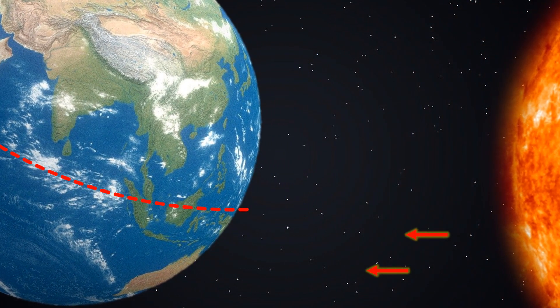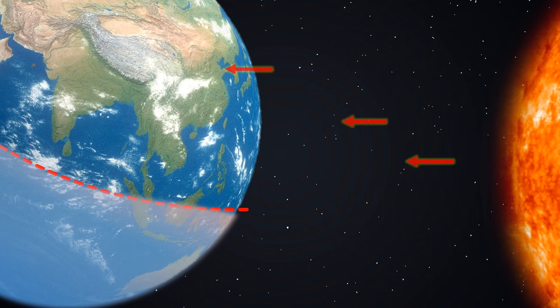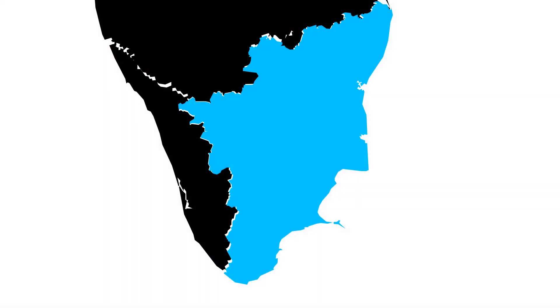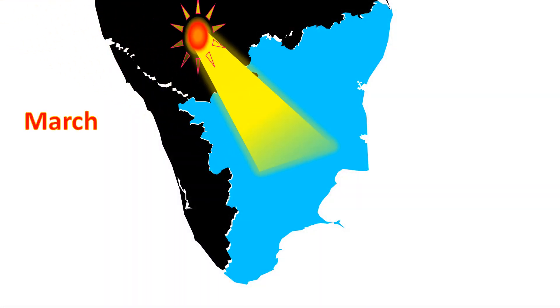But during certain other months, the northern hemisphere receives direct sunlight from the sun. So, during the months of March, April, and May, the temperatures soar to 40 degrees in Tamil Nadu.